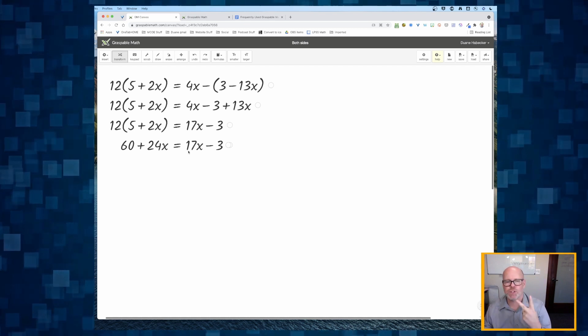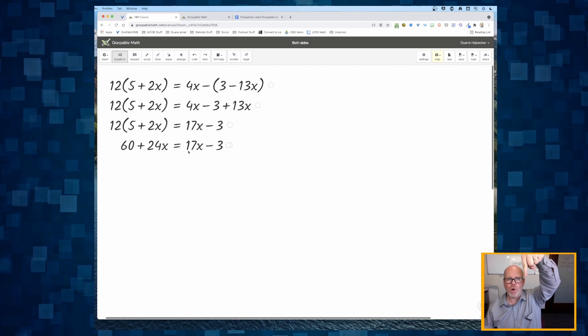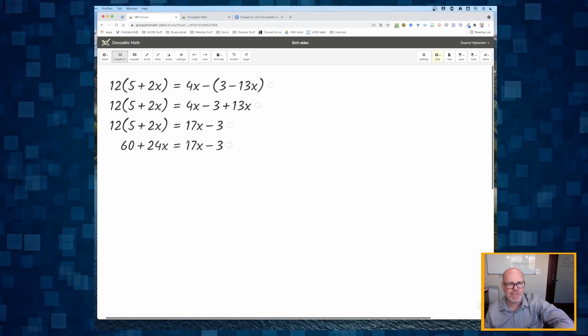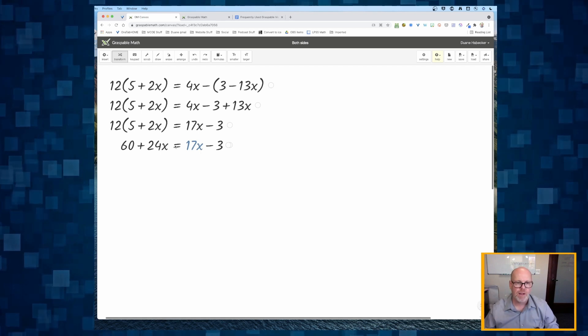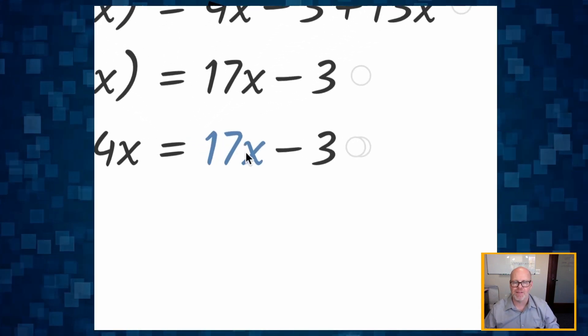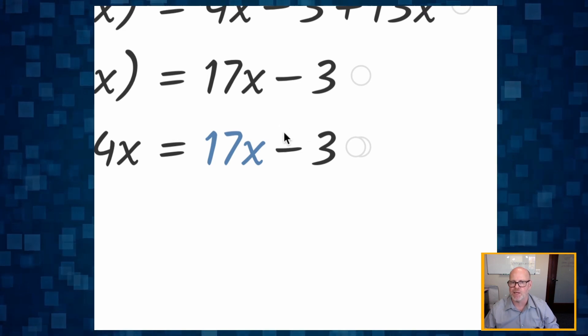Now, a couple of ways to use Graspable Math to show that. One way is I'm going to hold down the shift key and I'm going to select the 17x, making sure that only the 17 and the x are highlighted.